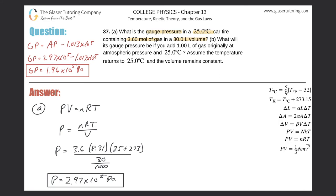Letter B: What will the gauge pressure be if you add one liter of gas originally at atmospheric pressure and 25 degrees Celsius? Assume temperature returns to 25°C and volume remains constant. So imagine a 30-liter rigid tank with 3.6 moles already inside. Since the volume remains constant, it behaves like a rigid tank — the volume won't change.